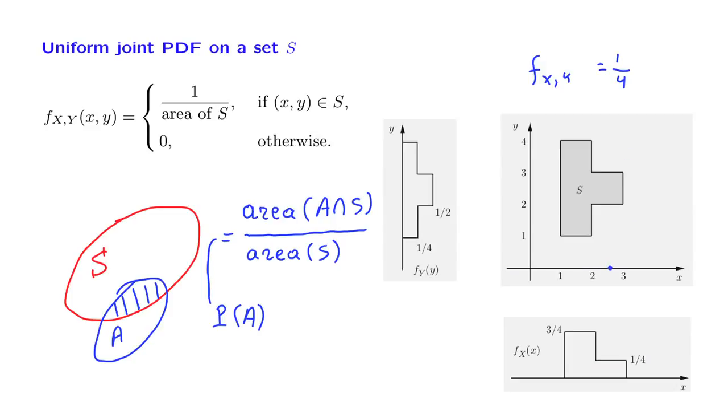We can now find the marginal PDF at some particular X. So we can fix a particular value of X, let's say this one. To find the value of the marginal PDF, we need to integrate over Y along that particular line. And the integral is going to have a contribution only on that segment. On that segment, the value of the joint PDF is 1/4. And we're integrating over an interval that has a length of 1. So the integral is going to be equal to 1 fourth.